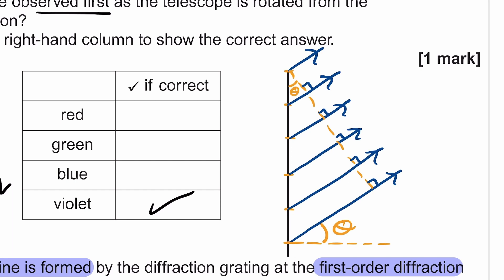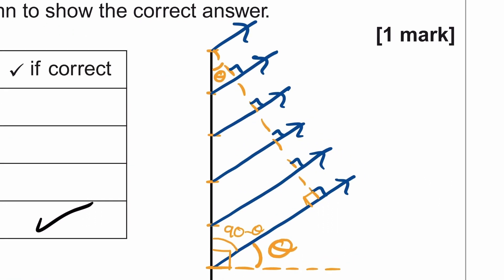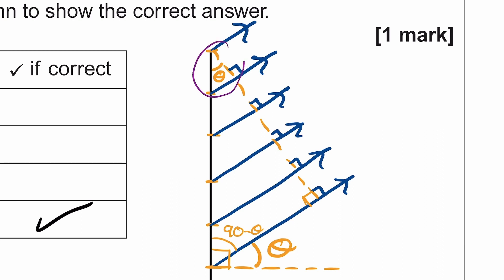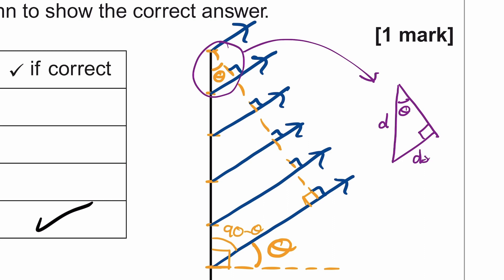To see why the angle is also θ: this angle is 90°, and if this angle is θ, then the remaining angle in that triangle must be 90° − θ. Considering the second triangle where one angle is also 90°, and all three angles must sum to 180°, the top angle must therefore be θ. Zooming into that triangle: the distance d is the separation between two adjacent slits, the angle is θ, and by trigonometry, the path difference is d sin θ.